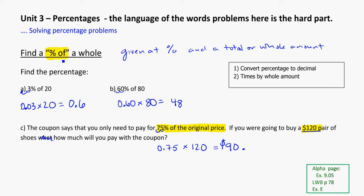For finding percentage of problems, convert to a decimal and then times by your whole amount. The hard part is making sure you do the conversion correctly. Common mistakes include things like doing 0.3 times 20. Remember, 0.3 is 30%, not 3%. Make sure you get your conversion correct.